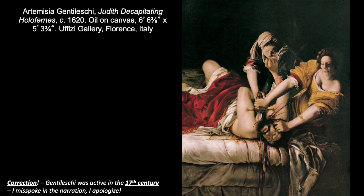Let's return to Artemisia Gentileschi's Judith Decapitating Holofernes from about 1620 — a great example of how contextual analysis can help us further understand the content and meaning of a work of art. Artemisia Gentileschi is an Italian Baroque painter, active in the 16th century and one of the few female artists who were successful during this period. The subject is a popular story for Renaissance and Baroque artists: Judith was a beautiful widow whose town, Bethula, was about to be attacked by the Assyrian army.